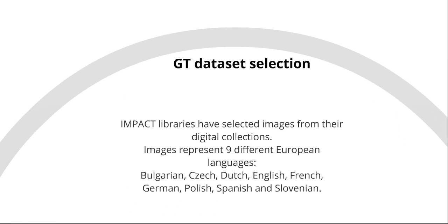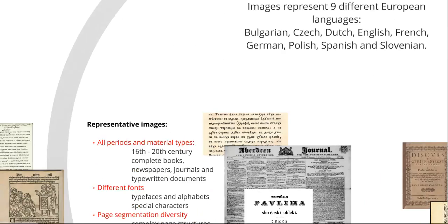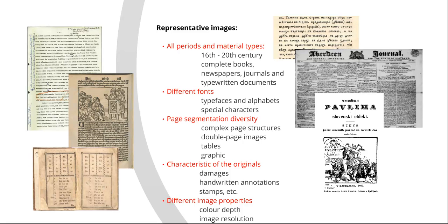What material was selected for the GT production? Impact libraries selected images from their digital collections, and these selected images take into account each Impact Project partner's future digitization priorities. The images represent nine different European languages: Bulgarian, Czech, Dutch, English, French, German, Polish, Spanish, and Slovenian. Altogether, the selection is a representative collection of all different kinds of materials European libraries have in their stock. The collection also represents the basic issues which cause errors in the OCR outcome.